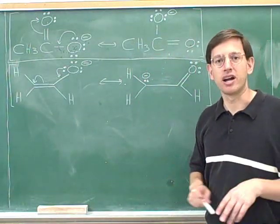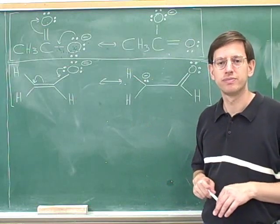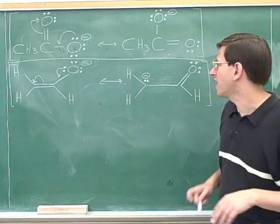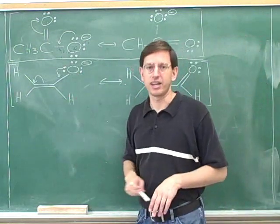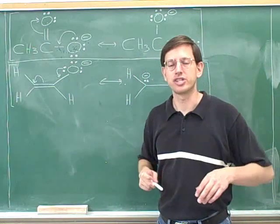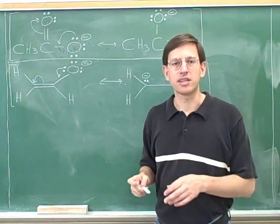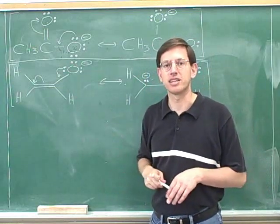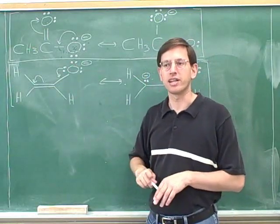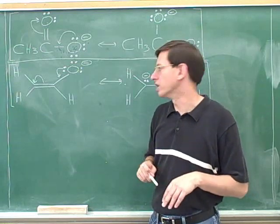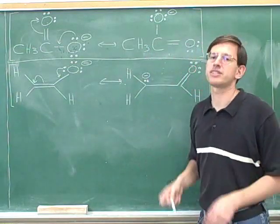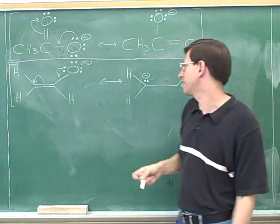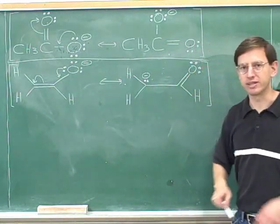Well, where would the negative charge rather be — on an oxygen or a carbon? You should be familiar with the idea that oxygen is more electronegative than carbon, meaning that oxygen wants electrons more. You can easily see that by looking at a periodic table: because oxygen is further to the right in the periodic table than carbon, the oxygen wants electrons and wants negative charges more. So the left-hand resonance structure is happier — the oxygen is happier having a negative charge than the carbon would be.